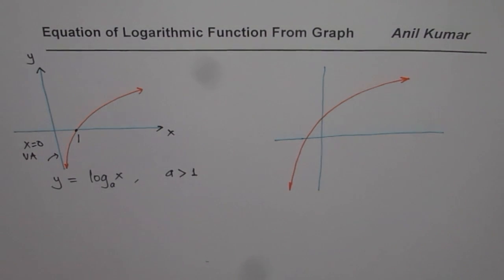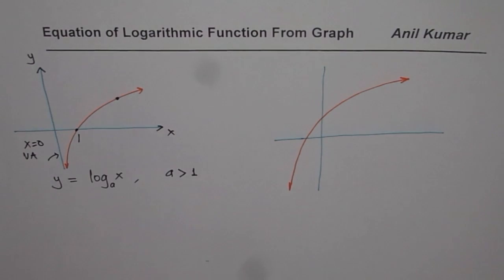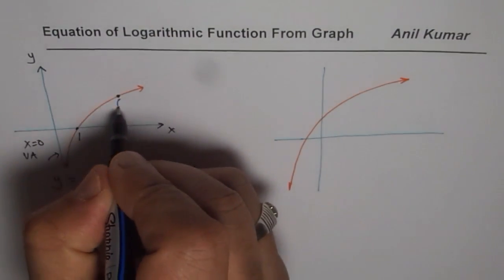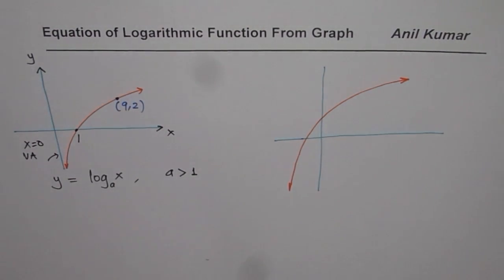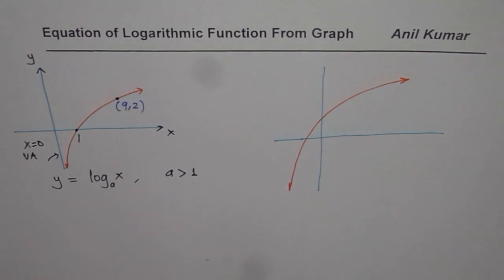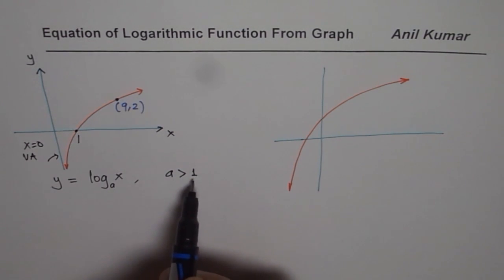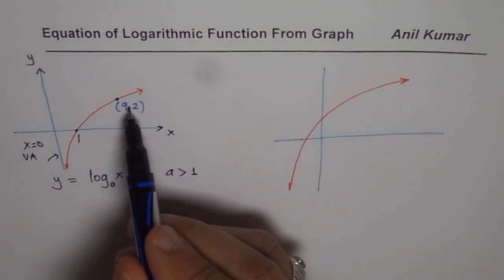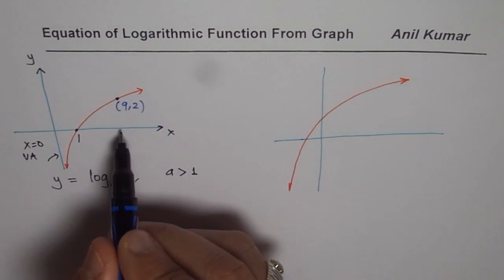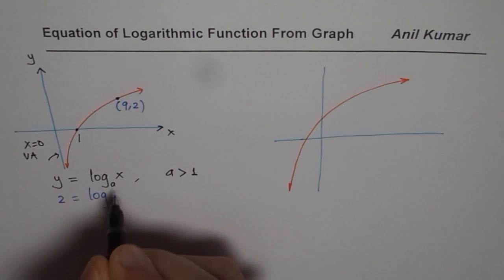Now if I specify a point on the graph, then we can actually find the equation of that particular graph. Let us say we define a point with coordinates 9, 2. The question is: what is the equation of this graph which has the point (9, 2) and x-intercept at 1? For x equals 9, y equals 2, so let me substitute these values: 2 equals log to the base a of 9.